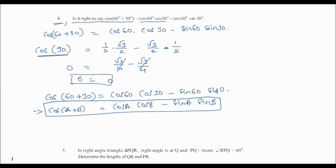Please remember these two important formulas: first, sin(A+B) = sinA·cosB + cosA·sinB; second, cos(A+B) = cosA·cosB − sinA·sinB.